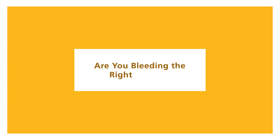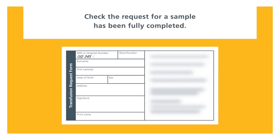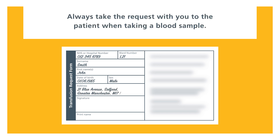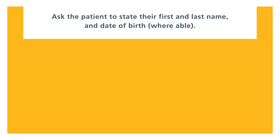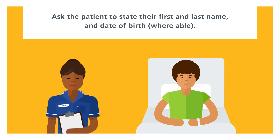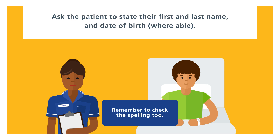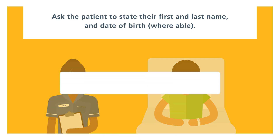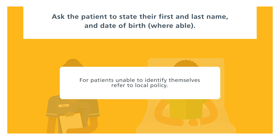Are you bleeding the right patient? Check the request for a sample has been fully completed. Always take the request with you to the patient when taking a blood sample. Ask the patient to state their first and last name and date of birth, where able. Remember to check the spelling too. For patients unable to identify themselves, refer to local policy.